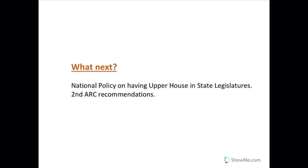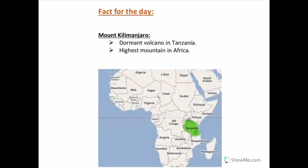What can be done? We need a comprehensive national policy on having an upper house in state legislatures. Recommendations of committees like the Second ARC need to be implemented. Also, more say should be given to local bodies, which will help strengthen grassroots-level democracy.